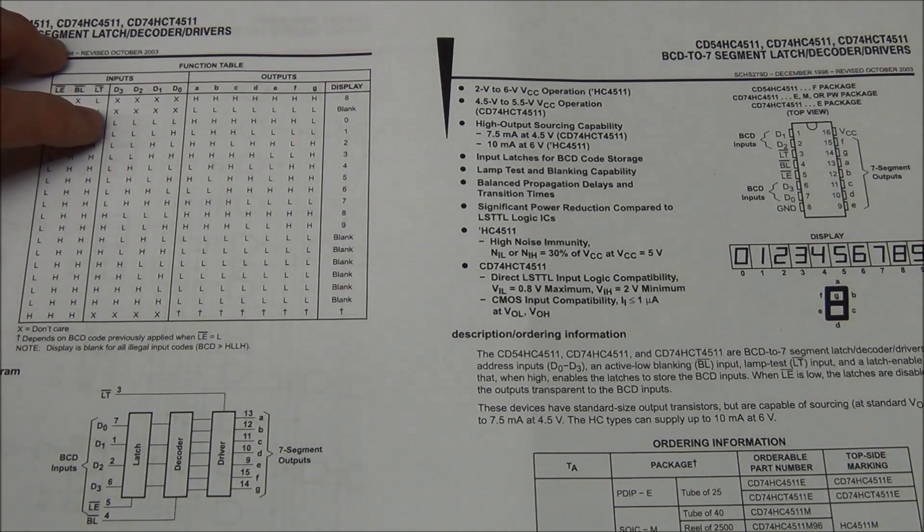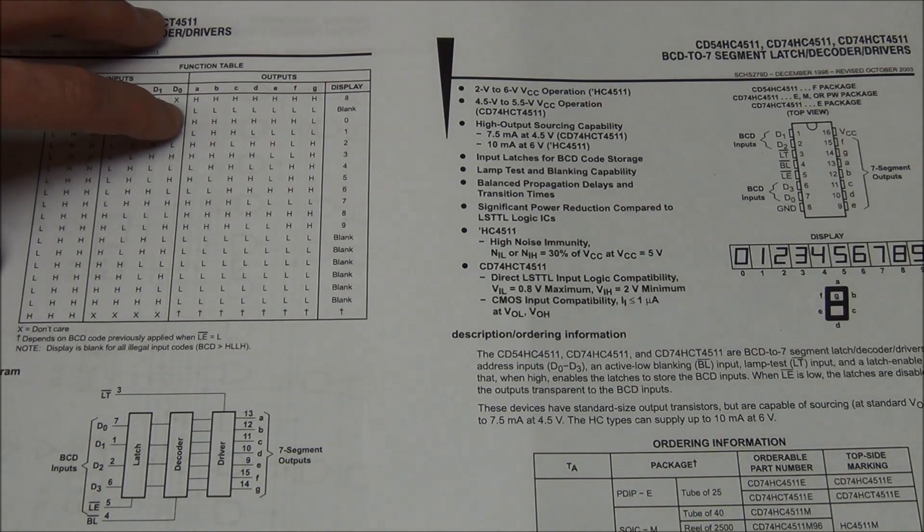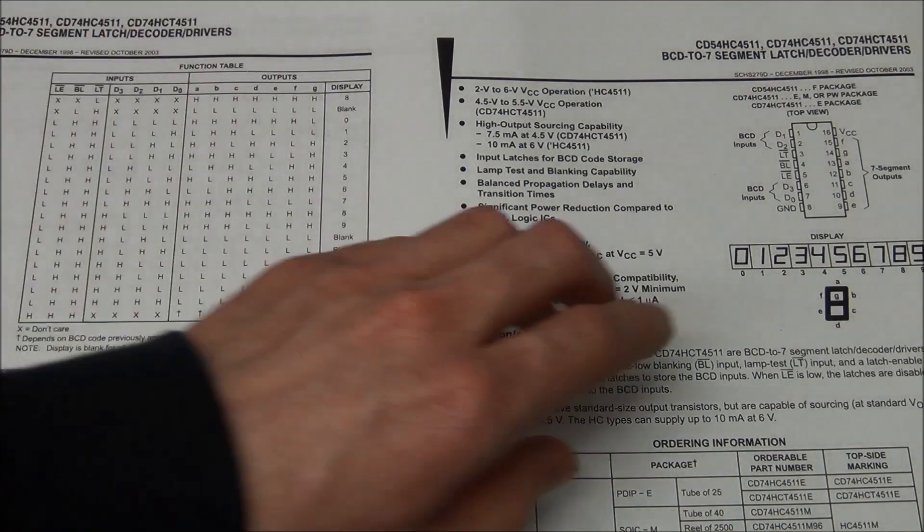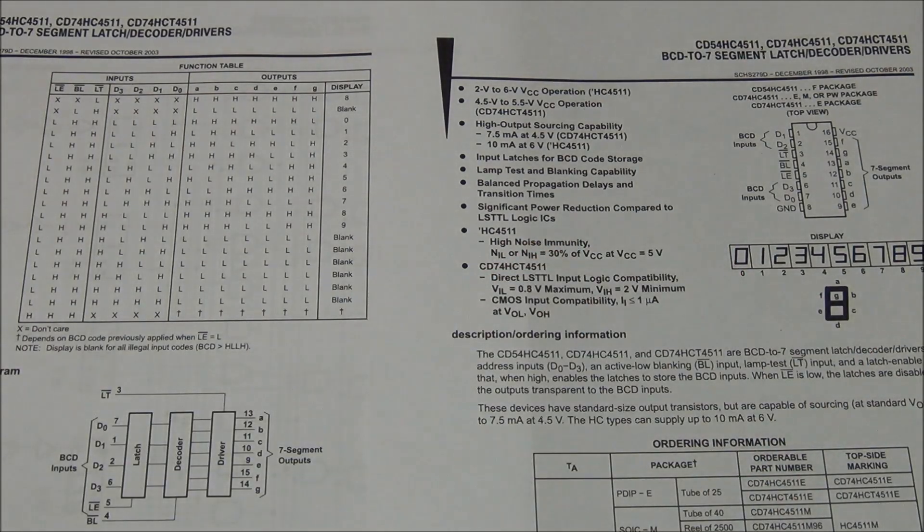And let's take an example here. If you want to set a 0 on the display, of course you have to have 0 in binary as well, all lows. And it will set all the display pins high except for the G. If you take a look at this, that's the middle one. And that's correct, because that's the only one you don't want if you want to display a 0.